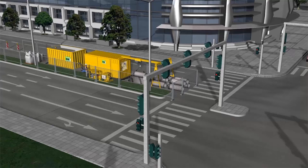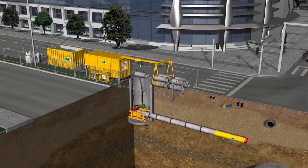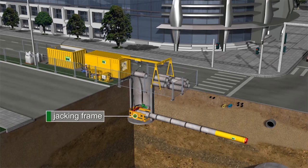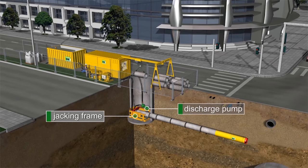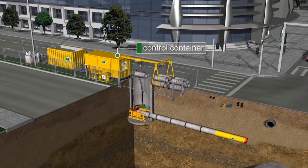In this case, the starting shaft consists of a round shaft of reinforced concrete with an inner diameter of 3.2 meters. The compact jacking frame is then placed into the starting shaft, and the slurry discharge pump is mounted on a platform adjacent to the jacking frame. The operating container with the control panel and the hydraulic power pack is located on the top rear side of the shaft.